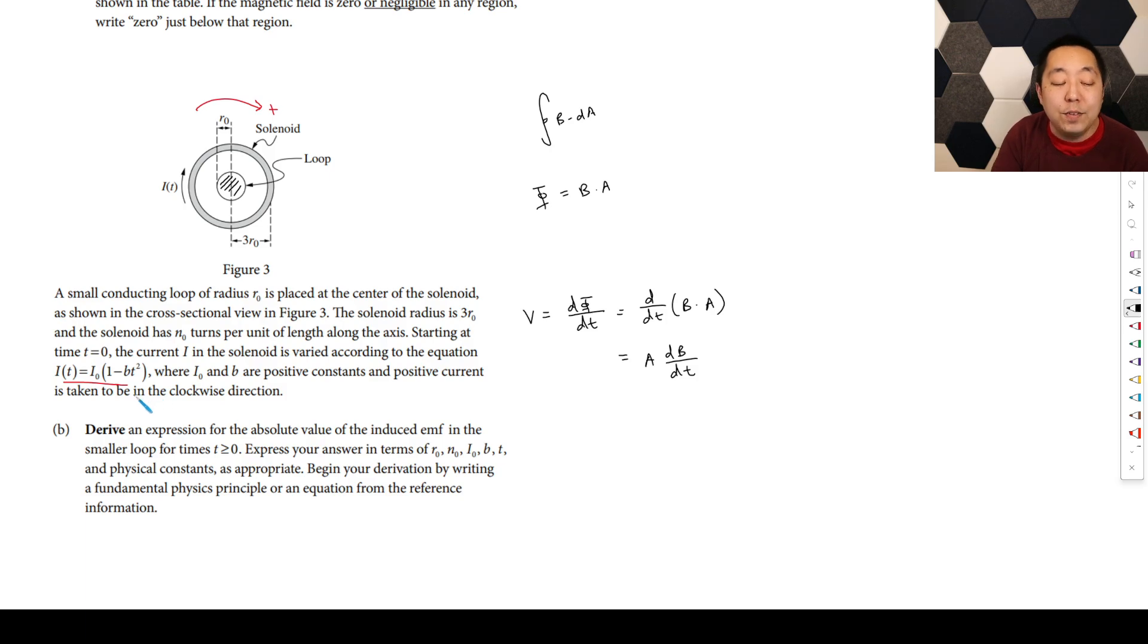Now we have a current, so we have to understand what the magnetic field is depending on the current, because I need to find an expression for B so that I can then take the derivative of that. We have to remember what is the equation of the magnetic field through a solenoid. So we're going to look at that as mu naught I times N0. So that is the formula, that's the magnetic field.